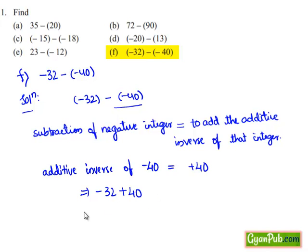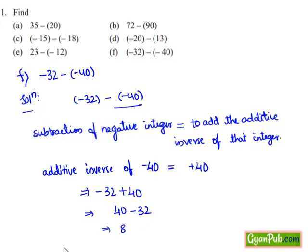This can be written as 40 minus 32. Since 40 is greater than 32, we can apply general subtraction. We know that 40 minus 32 is 8. So the solution of minus 32 minus of minus 40 is equal to 8.